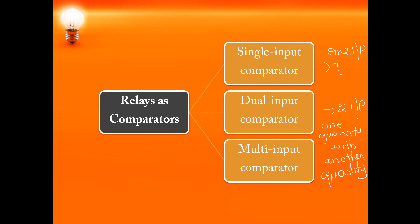Examples of dual input comparator type relays are distance relays and differential relays. The distance relay measures the current entering the circuit and compares its magnitude or phase angle with the bus voltage. Multi input comparators have more than two input signals and are especially used for the realization of special characteristics other than straight lines or circles.